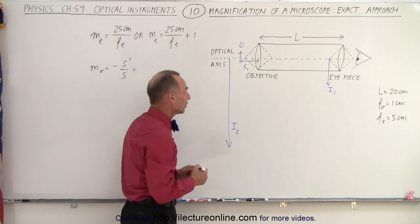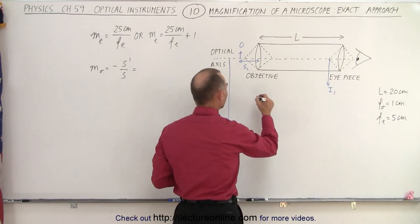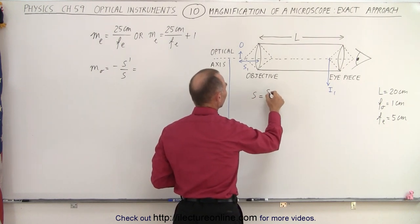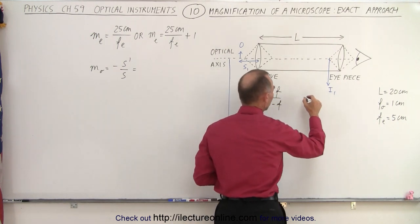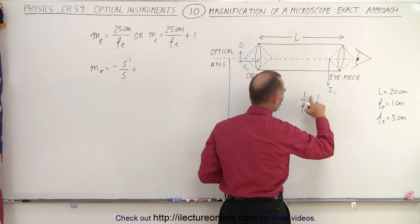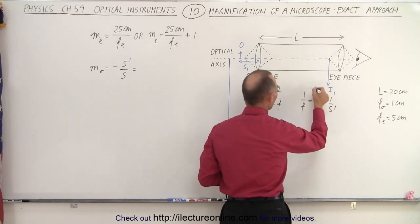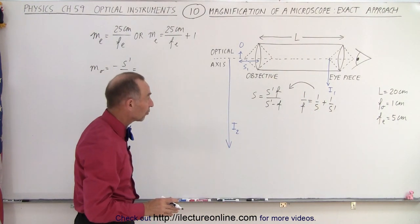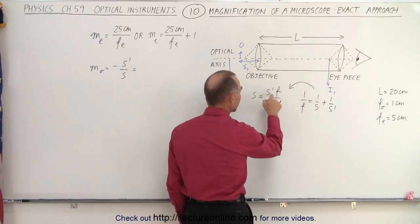We can figure out what the object distance should be. We know that the object distance is equal to s-prime times f divided by s-prime minus f. That comes from the lens equation: one over the focal length equals one over the object distance plus one over the image distance. This requires us to know the focal length of the objective and the image distance of the objective.